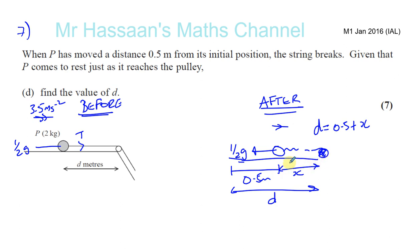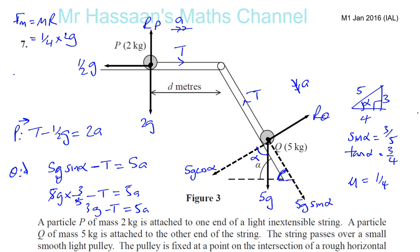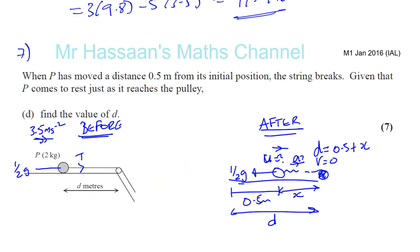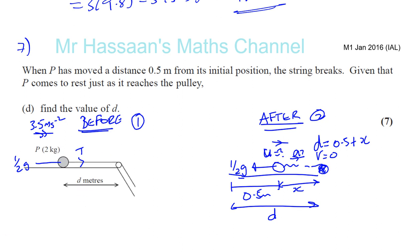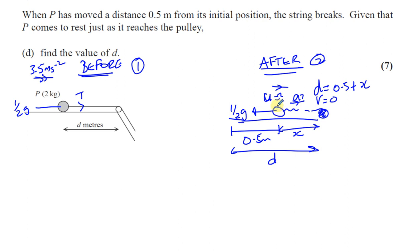So to find this distance X, we need to know what speed it was traveling at before, when the string broke. We know the speed it travels at the end is 0. We don't know this. And we also need to find the acceleration in this part here. So we can use the first situation here before it breaks, and after it's 2, to calculate what the speed of this was at the point where the string broke. Because we know that it's traveled 0.5 meters until the string broke.